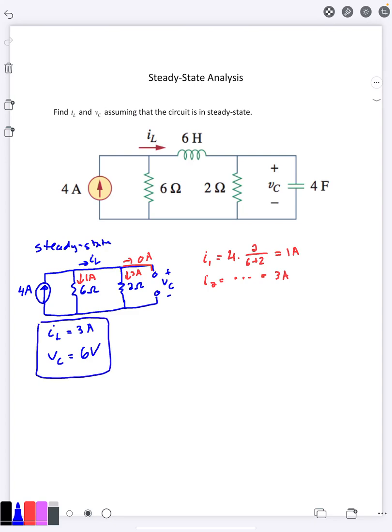And now we've determined the current through the inductor and the voltage across the capacitor in steady state without having to do much work at all.